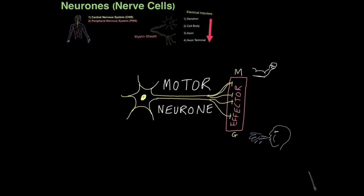Finally, we have the motor neuron. The motor neuron takes electrical impulses from the central nervous system and transmits them to effectors. Effectors are parts of the body that basically move — think of motor for movement. So you have muscles, which twitch and contract, and you have glands, which squeeze and secrete enzymes and hormones. For example, you have salivary glands which release saliva. Motor neurons have relatively short dendrons, not like the massive ones on sensory neurons. We quickly get to the cell body, then the electrical impulse travels down a relatively longer axon, and then it gets to the axon terminal, which will synapse with an effector.